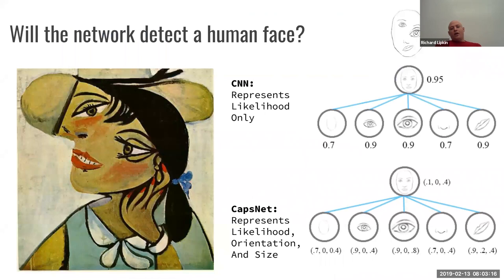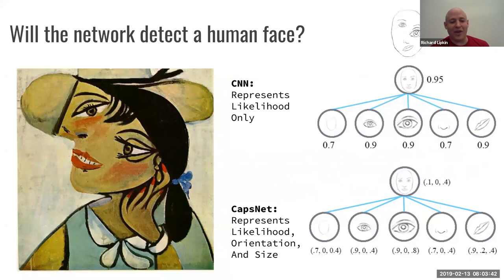To illustrate the utility of capsule networks, we can ask ourselves a quick thought experiment: will the network detect a human face? If we have a Picasso image, will a CNN detect a human face? Well, if we're representing the likelihood only, we have a left eye, a right eye, a mouth — what's not to like? But if we have a CapsNet, then we're representing both the likelihood, the orientation, and the size of all these features. The likelihoods match up, but the orientations don't match up, and the probability that we actually have a face is only 0.1, whereas with a CNN we would assign that as 0.95.